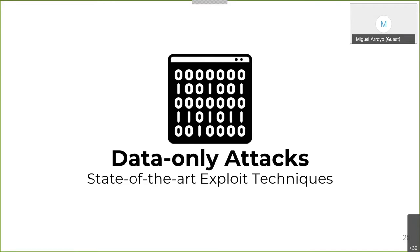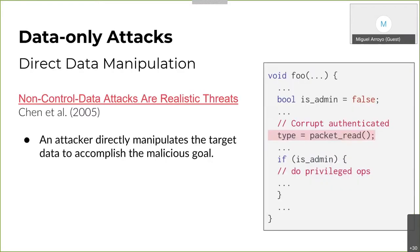There are two classes of data-only attacks. The first is categorized as direct data manipulation. Here, an attacker directly manipulates the target data to accomplish the malicious goal. It requires the attacker to know the precise memory address of the target non-controlled data. For instance, in the example on the right, we have a vulnerable function called packet_read, which can directly corrupt the variable isAdmin located right above, which can be used to enter the if condition and run privileged code. This seems like everything needs to line up in order for this to work — so the question is, can we do more?